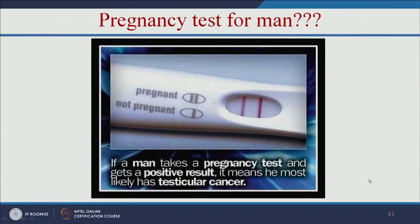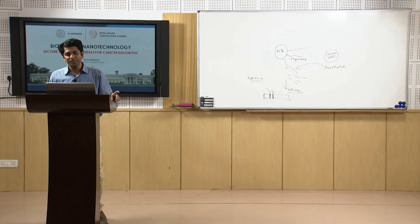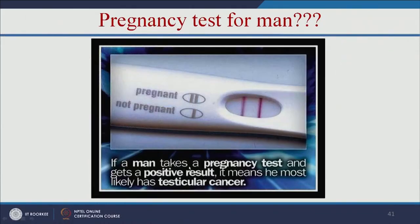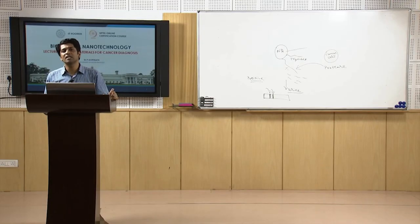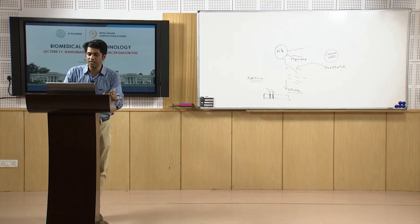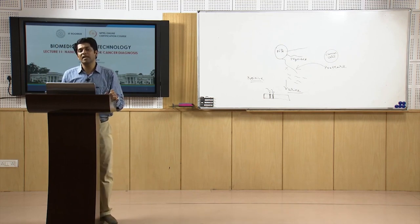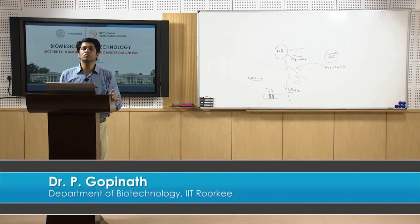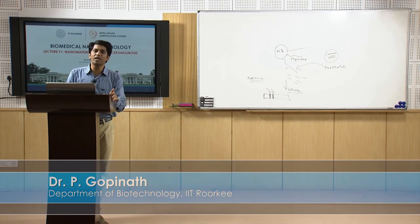Another example: we thought pregnancy test kits were only for females. If pregnant, there are two lines; if not, one line. Recently it was found that if a man takes a pregnancy test kit and gets a positive result, it most likely means he has testicular cancer. So there are several methods available for cancer diagnosis, and every day new discoveries are coming in this field for advancing early cancer diagnosis.